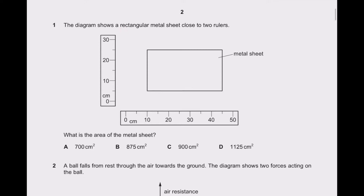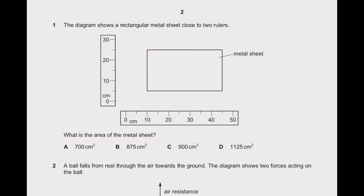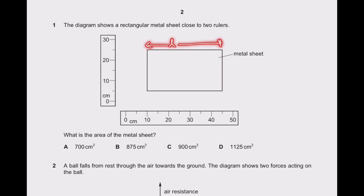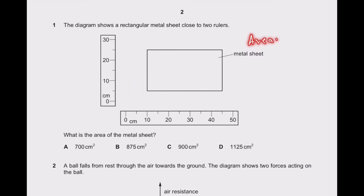Now the very first question. This diagram shows a rectangular metal sheet close to two rulers. These are the two rulers given to us and this is the metal sheet. What is the area of this metal sheet? As we can see it is a rectangular shape sheet, so by measuring the length and the breadth we can easily find out the area by length into breadth.